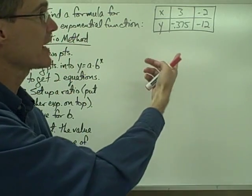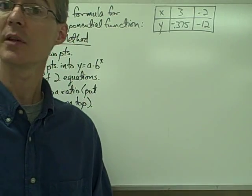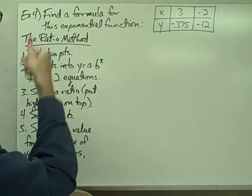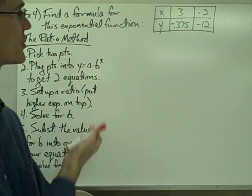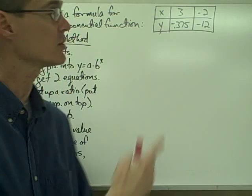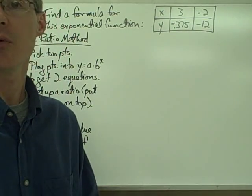However, since we can't use our calculator to find the formula for this exponential function, we're going to have to use a different method. The method we're going to use is called the ratio method, and basically, this is just a way of calculating by hand, using simultaneous equations, the values we need for our formula.